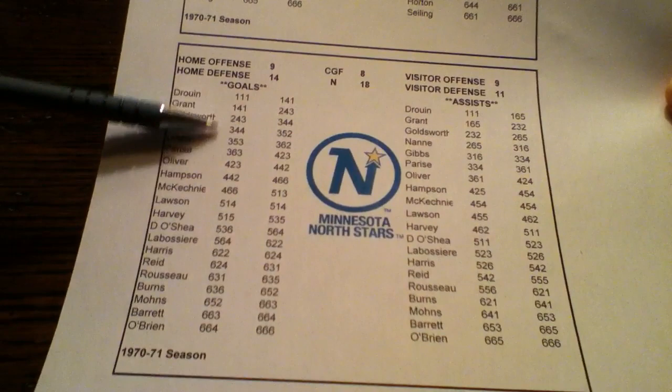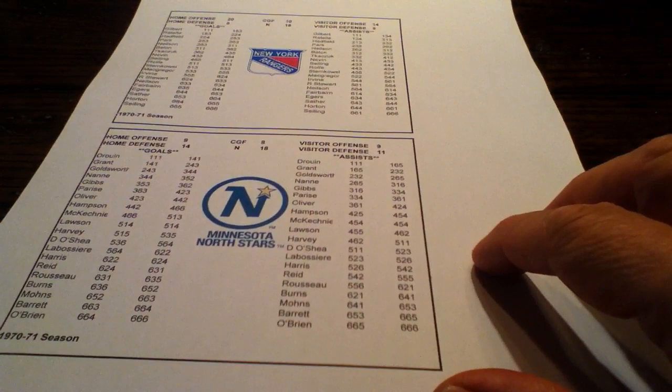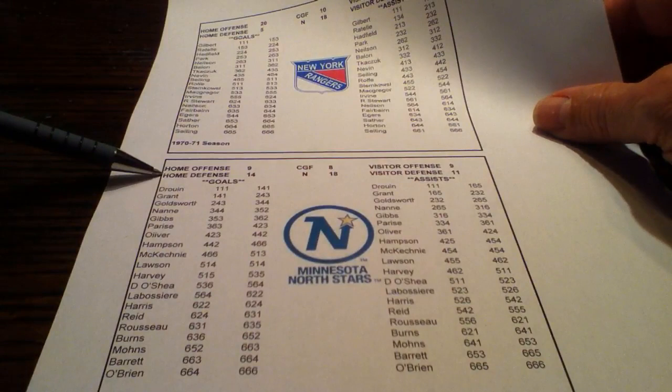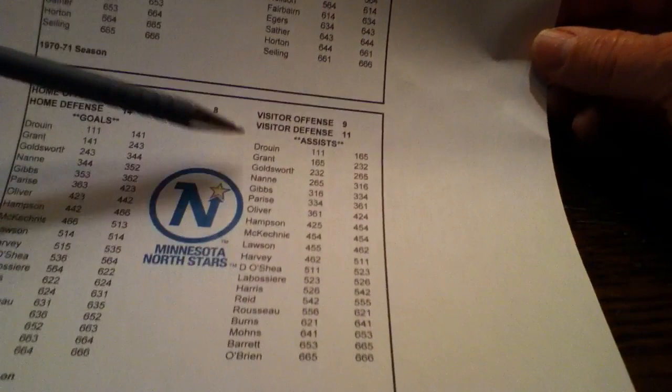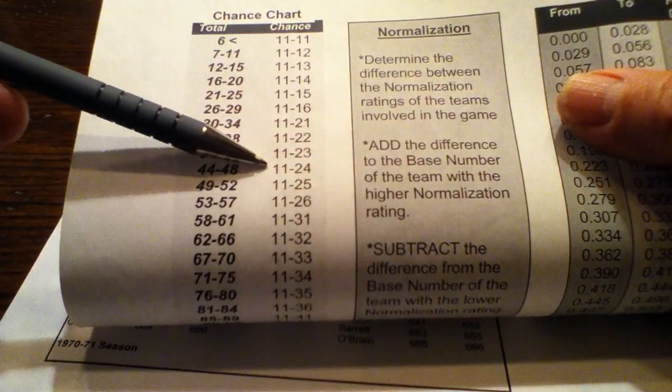I'm going to be playing a 1970-71 New York Rangers against the Minnesota North Stars, and I'll play the whole game because it's a quick game. What you do is add up the ratings. New York is the visiting team, so their visitor offense number is 14. Minnesota's home defense is 14, so that's 28. Minnesota's home offense is 9, and the visitor defense for the Rangers is also 9, so that's 18. Adding 28 and 18 gives 46, and looking at the chance chart, 46 corresponds to 11 to 24, meaning you roll 2d6 and any roll from 11 to 24 means a scoring chance.